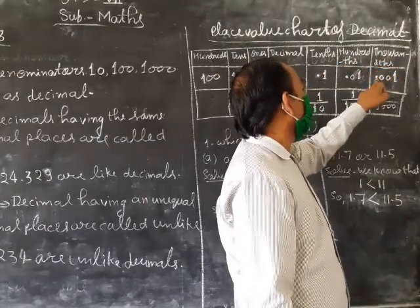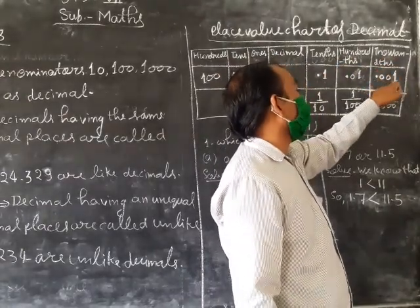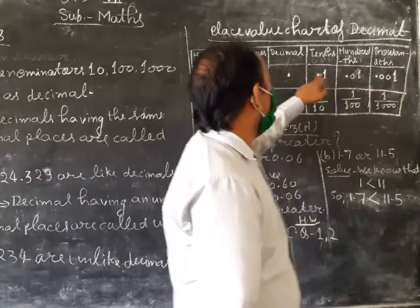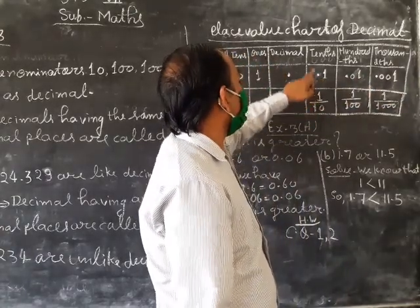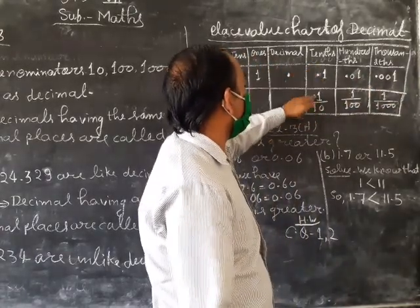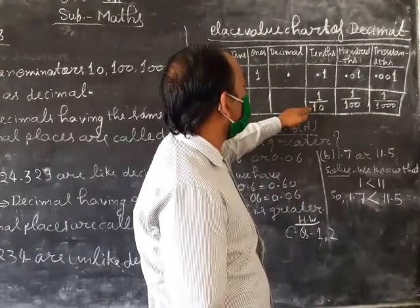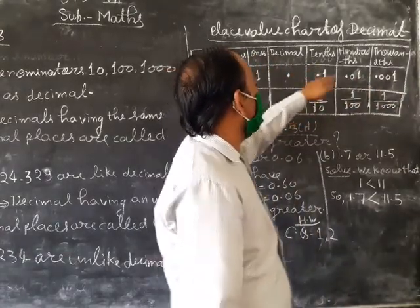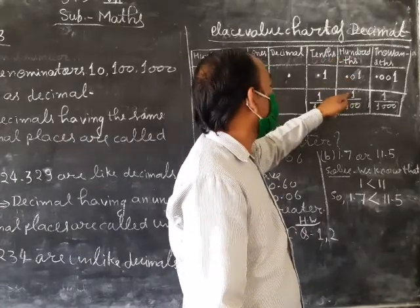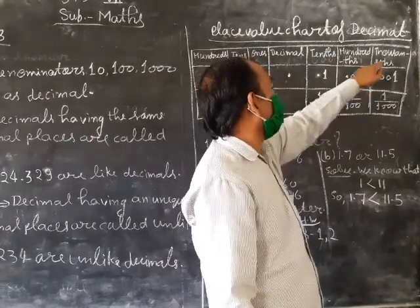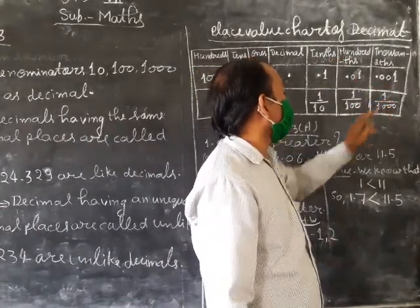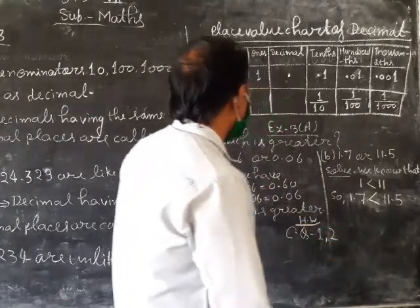Thousandths means 0.001. Going right, each place is divided by ten: one upon ten, one upon hundred, one upon thousand.